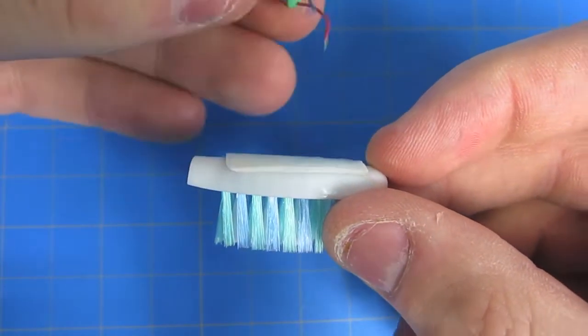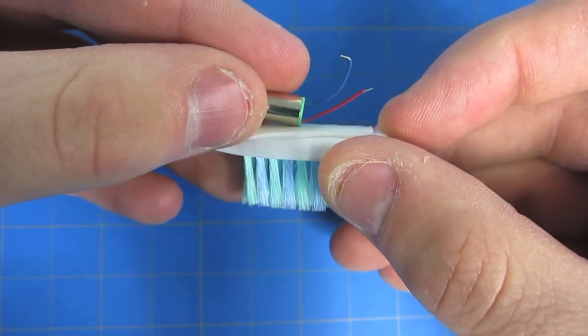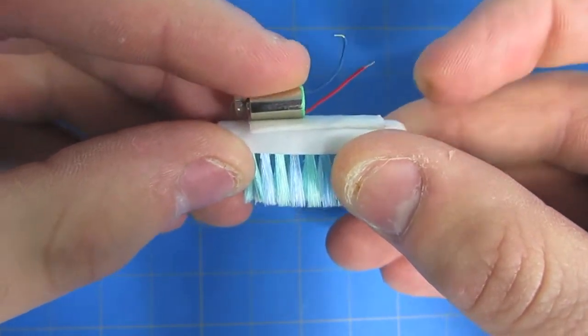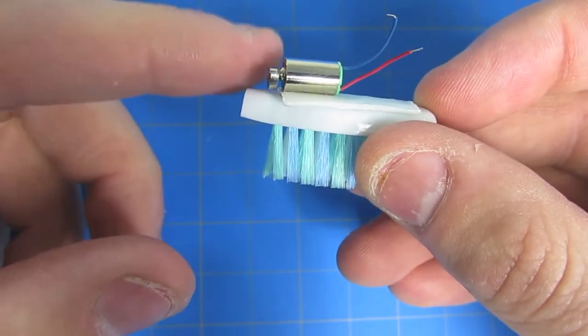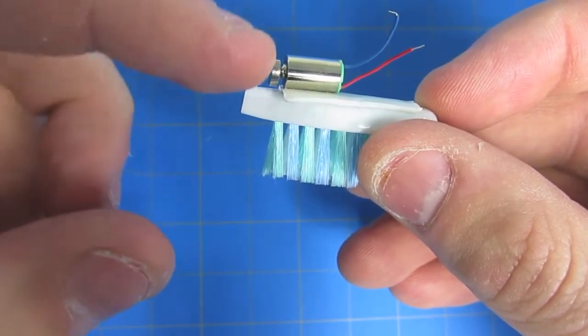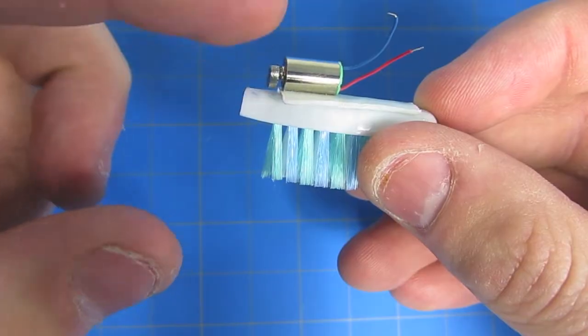Take your vibrating pager motor and put it so the rotating end is on the same side of your toothbrush as the cut end of your toothbrush head. Make sure that the end of the vibrating motor can spin freely, otherwise this project will not work.